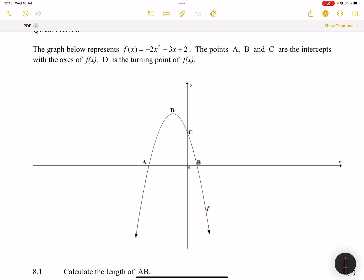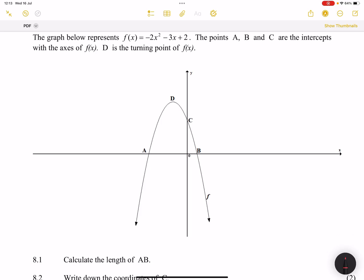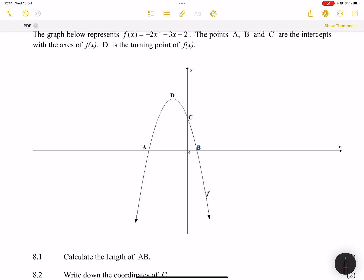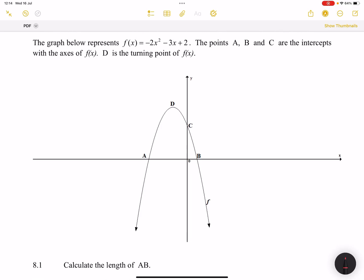We've got a parabola, that's for sure. And they say to us calculate the length of AB. Now note, A and B are the x-intercepts, so we would need to find out what are the coordinates of A and B respectively so that we can work out what that distance is.